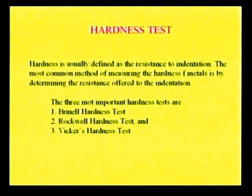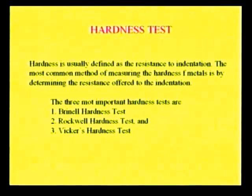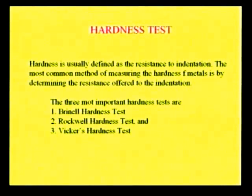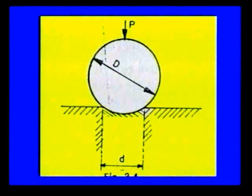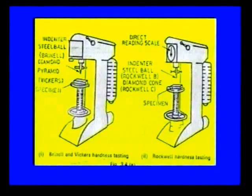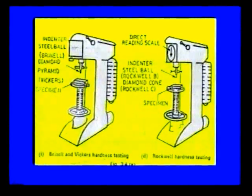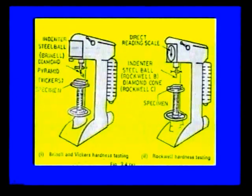The next one is the hardness test. Hardness is usually defined as the resistance to indentation. The most common method of measuring hardness of metals is by determining the resistance offered to indentation. The three most important hardness tests are the Brinell hardness test, the Rockwell hardness test, and the Vickers hardness test. In the Brinell hardness test, we use a ball indenter. In the experimental setup, the work piece is placed in a vise and a handle is used for loading. A ball indenter is used for the Brinell test and a diamond indenter for the Vickers test.